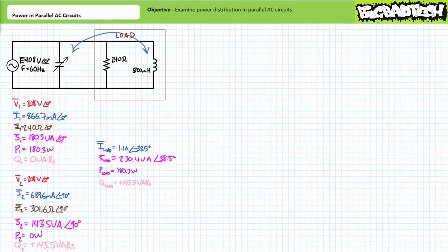In a perfectly power factor corrected circuit, an equal and opposite amount of reactive power bounces back and forth solely between the two reactive elements. Importantly, given the cyclical exchange of power occurs within the circuit itself, the source does not need to provide reactive power. As such, we might expect source current to be smaller in magnitude and perfectly in phase with supply voltage for a power factor corrected circuit. Let's see if this is the case.